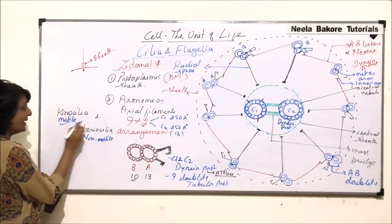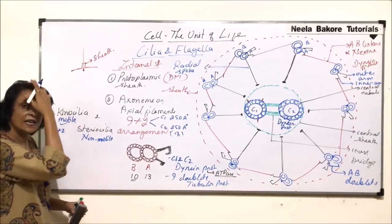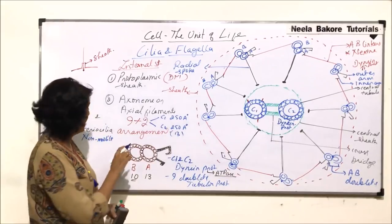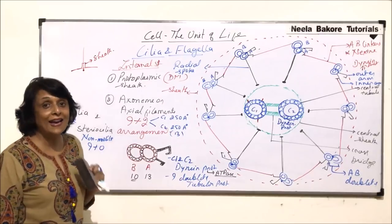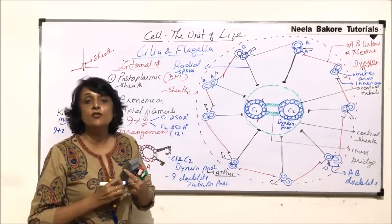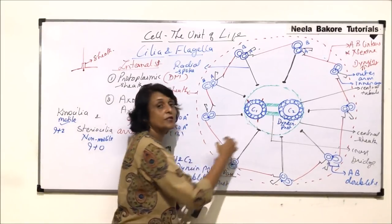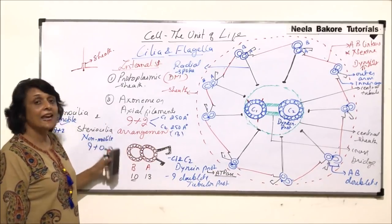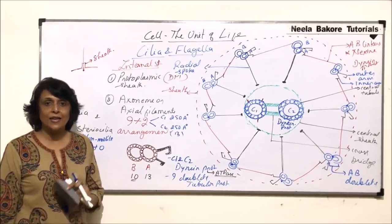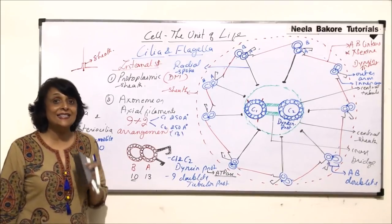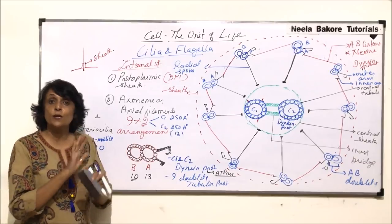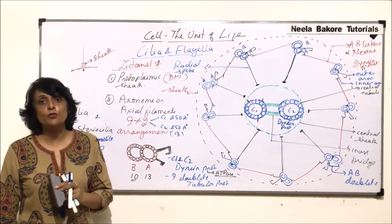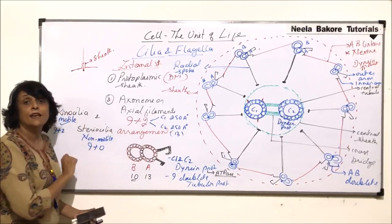Stereocilia are not motile, so they do not need the central two microtubules that start movement. Therefore, stereocilia have a 9+0 arrangement: the nine peripheral doublets are exactly the same, but the central two are absent. If a question asks about the microtubular arrangement in cilia or flagella, the answer is 9+2, referring to kynocilia. Only if stereocilia are specifically mentioned do we answer 9+0.